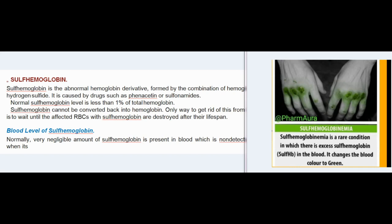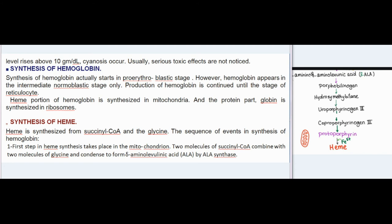Sulfhemoglobin is the abnormal hemoglobin derivative formed by the combination of hemoglobin with hydrogen sulfide. It is caused by drugs such as phenacetin or sulfonamides. Normal sulfhemoglobin level is less than 1% of total hemoglobin. Sulfhemoglobin cannot be converted back into hemoglobin; the only way to eliminate it is to wait until the affected RBCs are destroyed after their lifespan. Normally a very negligible, non-detectable amount is present in blood, but when its level rises above 10 g/dL, cyanosis occurs.